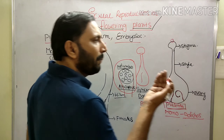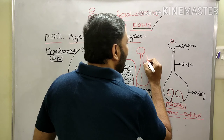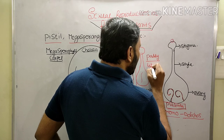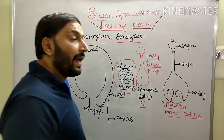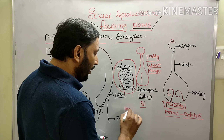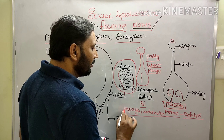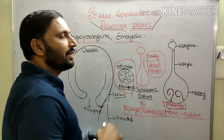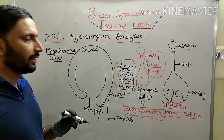Inside the ovary, one ovule or two or many ovules may be present. Only one ovule is seen in paddy, wheat, and mango — so only one seed is present in each. Whereas in papaya and watermelon, many ovules are present inside the ovary. Now we move to the structure of the ovule.